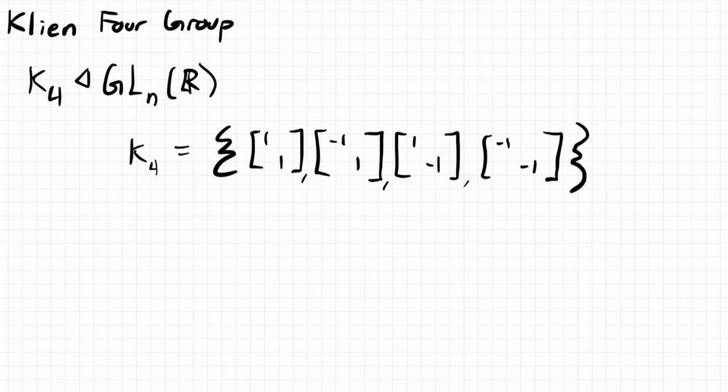And so what we can see from the Klein-4 group is that there are four elements, so you can call them, you know, 1, x, y, and z, say,